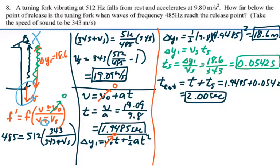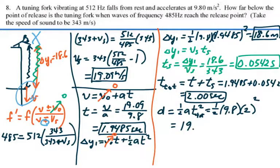So, where is the tuning fork after it's fallen for 2.00 seconds? So our true distance that it has fallen is equal to one-half acceleration times this true total time squared. And that's going to be one-half times 9.8 times 2.00 seconds squared, which is going to be 19.6 meters.